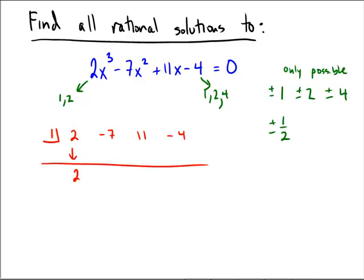It looks like I get 2, 2 times 1 is 2, -5 times 1 is -5. There's a 6, and that's a 2. Since that remainder is not 0, that means we did not get a factor here. We've got to try again.